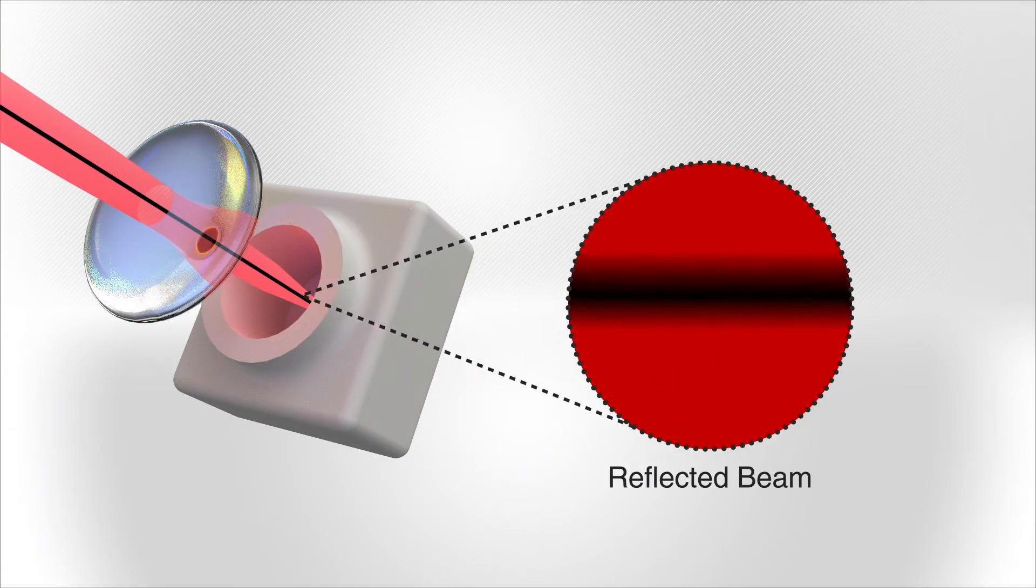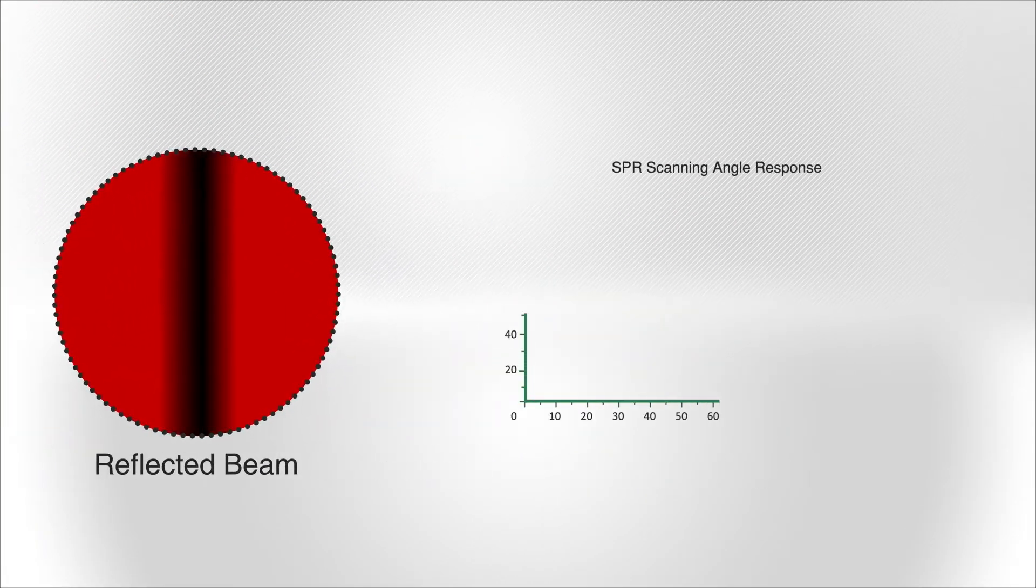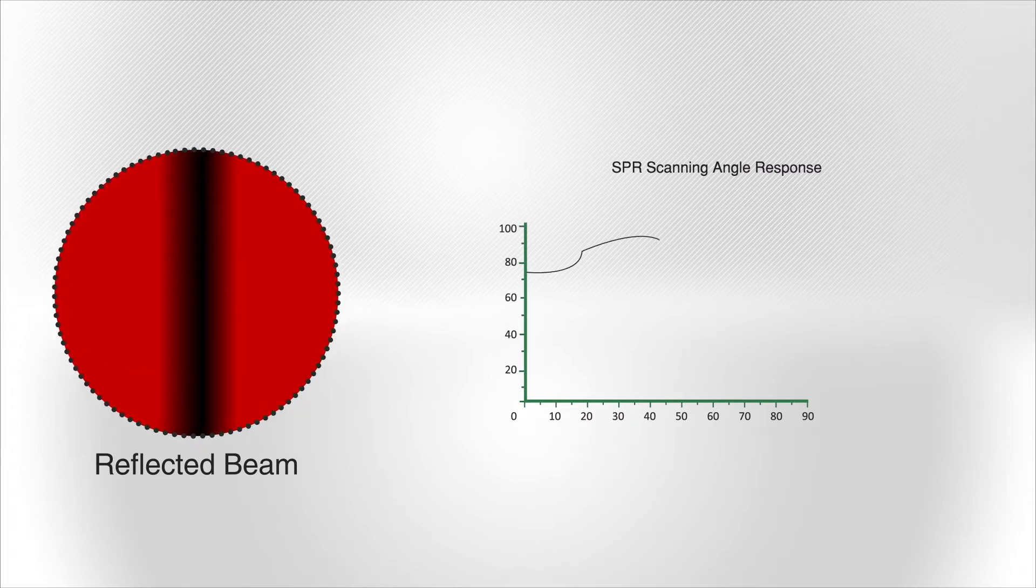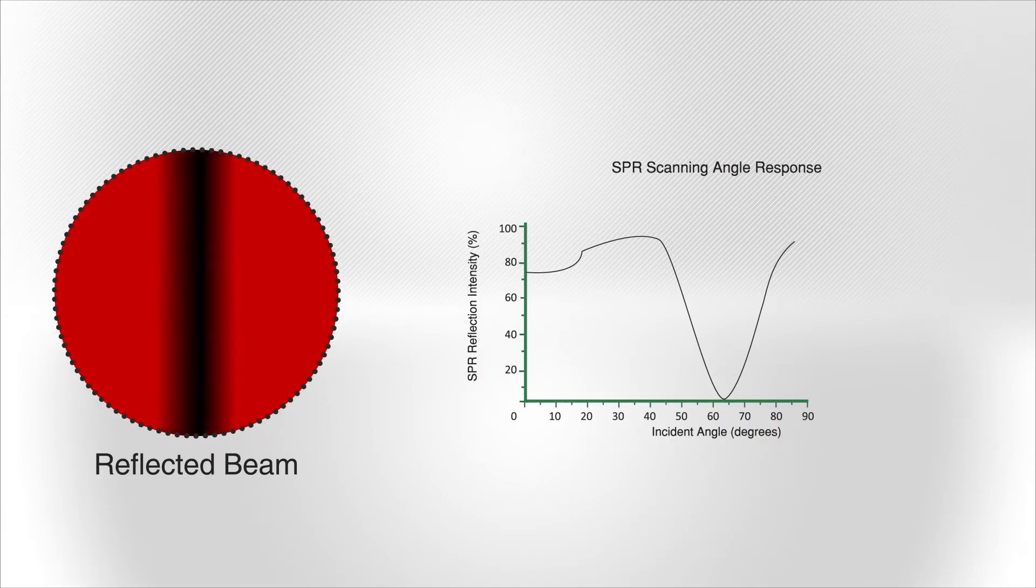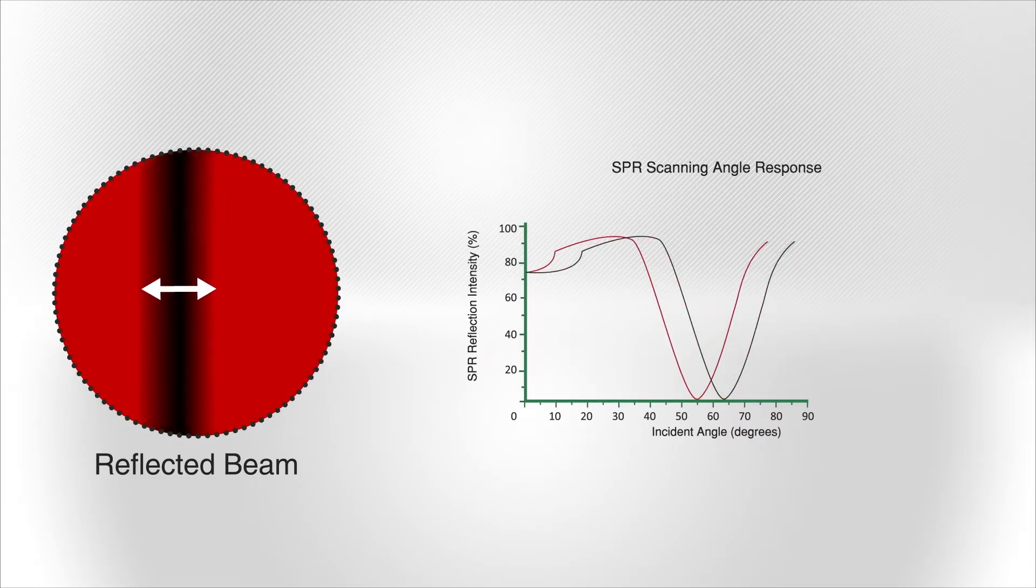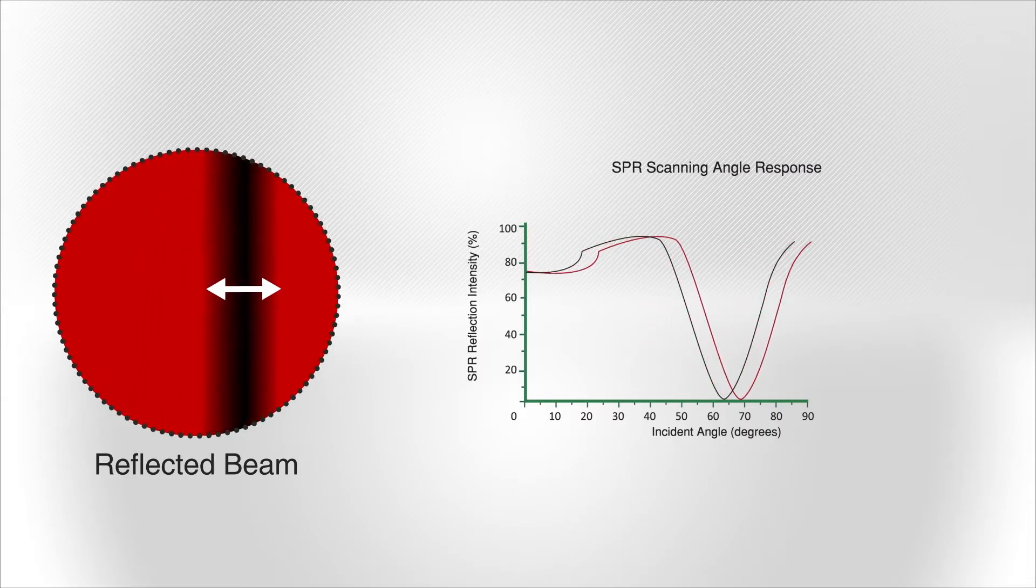This results in an intensity loss of the reflected beam and can be seen as a dip in the SPR reflection intensity curve plotted against the incident angle. These resonating electrons, known as surface plasmons, are extremely sensitive to the surrounding environment. By monitoring the shift of the SPR dip over time, the affinity and kinetics of molecular binding events can be studied.